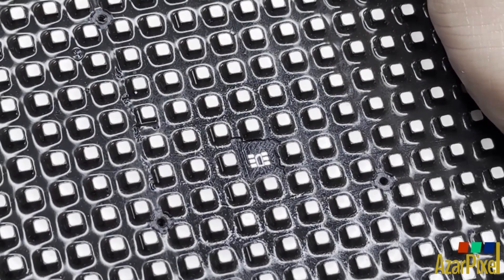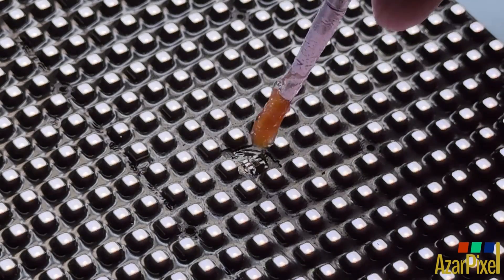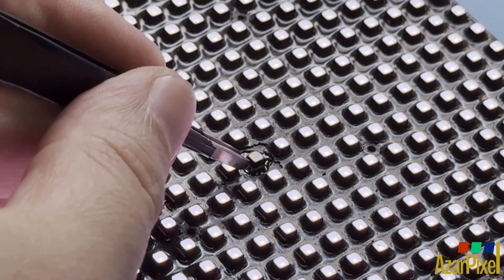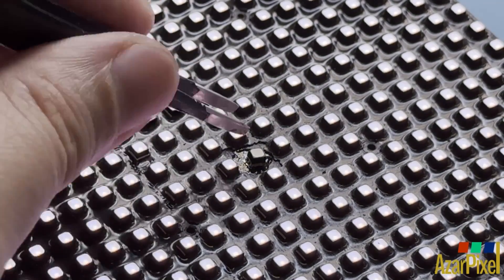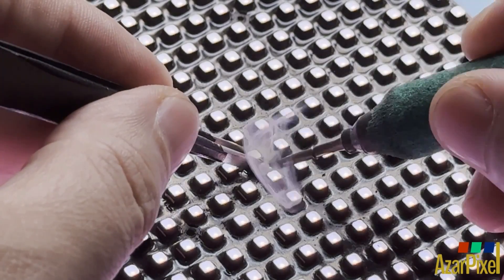Once the surface is cleansed, it is primed for the new LED installation. A small amount of flux is applied to the pad and the LED is delicately positioned before being soldered securely in place.